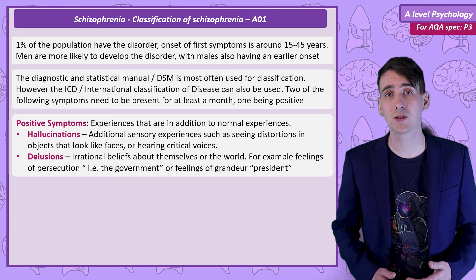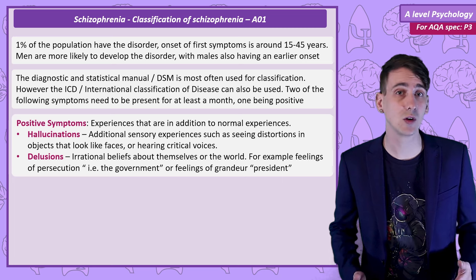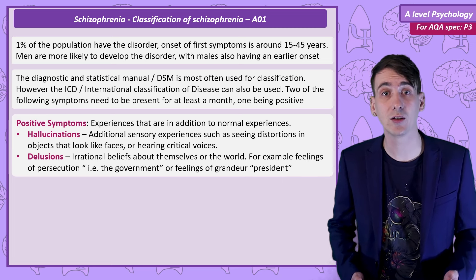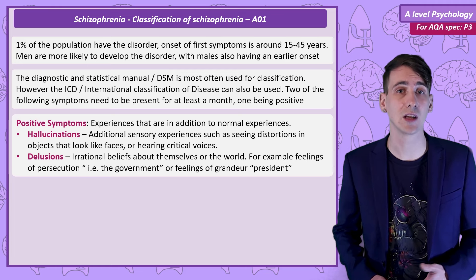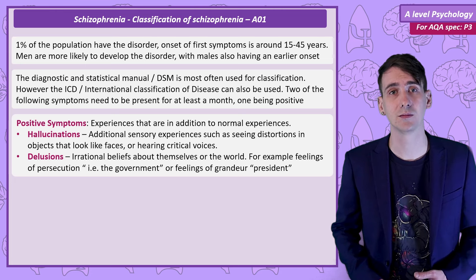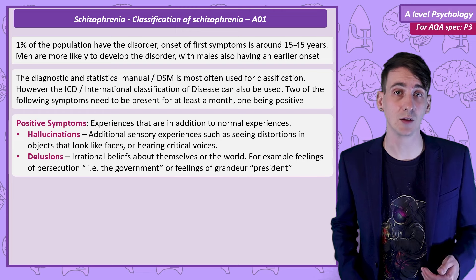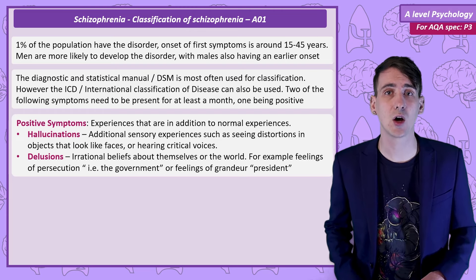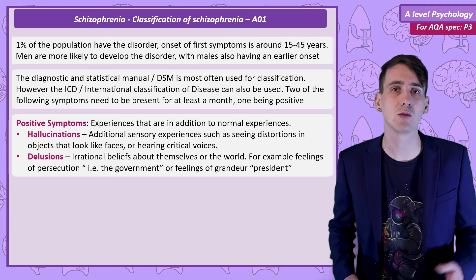Hallucinations are a positive symptom — they're additional sensory experiences. Someone could experience visual hallucinations, seeing objects that are distorted or even things that are not there at all. Auditory hallucinations could be sounds, but more commonly auditory hallucinations involve hearing voices that are often critical and abusive. A separate positive symptom is delusions — these are irrational beliefs about themselves, the people around them, or the world. Examples include delusions of persecution, feeling like people are out to get them, or delusions of grandeur, like thinking they're royalty.